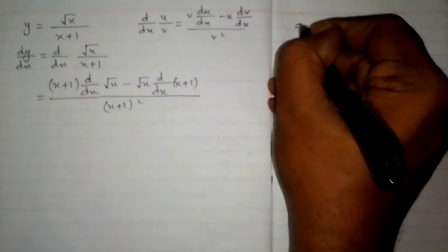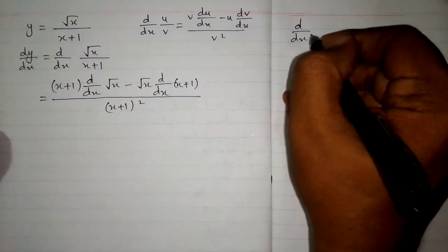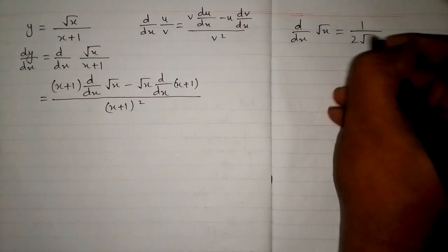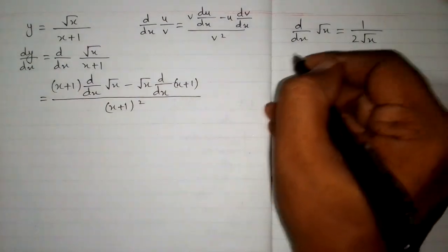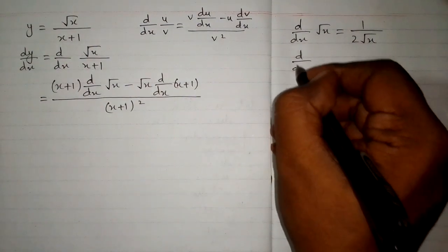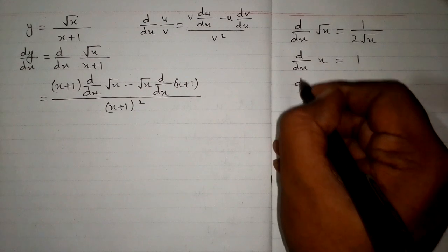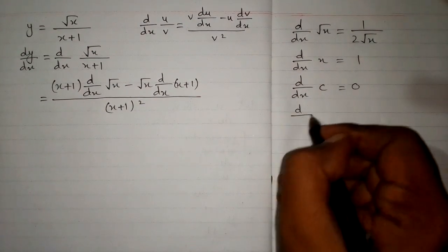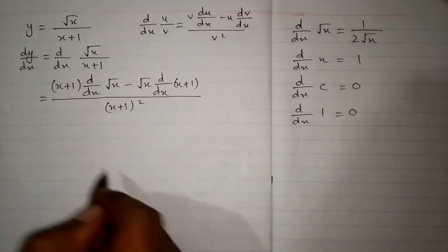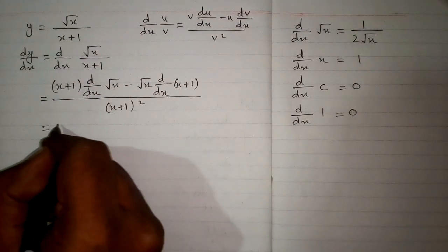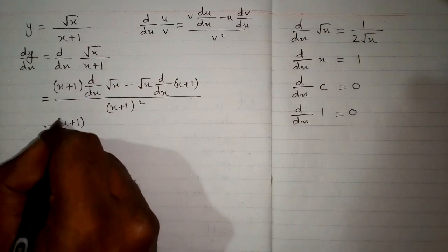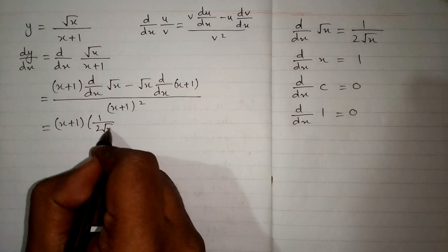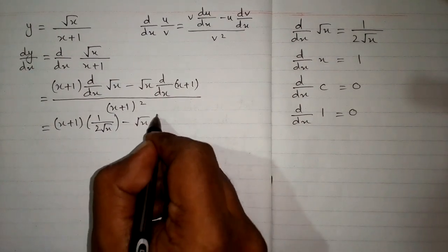We know that the derivative of square root of x is 1 upon 2 square root of x, and the derivative of x plus 1 is 1. So we have x plus 1 times 1 upon 2 square root of x minus square root of x times 1.